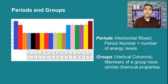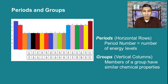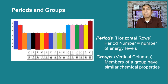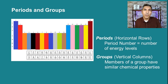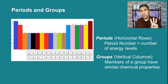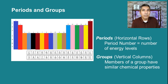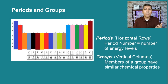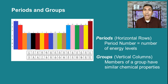The groups are the vertical columns on the periodic table — there are 18 groups on the modern periodic table. Sometimes these groups are called families, and that makes sense because the members of a group or family have very similar chemical properties. For example, if we look at group 11, we find it's comprised of copper, silver, and gold. Those three elements sure sound like they have something in common.